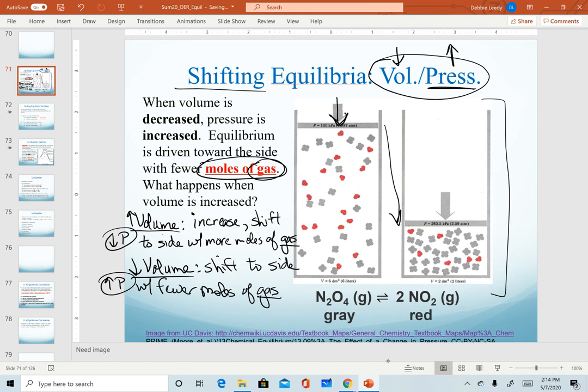Looking at our equation of N2O4 decomposing into 2NO2, if I increase the volume for this container, that's the same as decreasing pressure. I have 1 mole of reactant gas and 2 moles of product gas. If I make these changes, this reaction will shift to the right because I have more moles of gas on the product side.